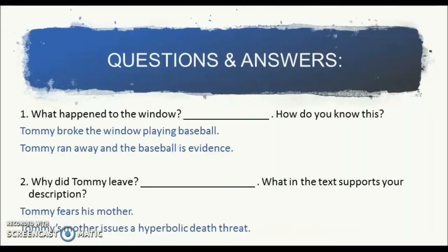Here are the questions and answers. What has actually happened to the window? From the situation, you can infer that Tommy broke the window by playing baseball. How do you know this? Tommy ran away and the baseball is evidence. Question number two: Why did Tommy leave? You can infer that Tommy is actually afraid of his mother. What in the text supports your description? Tommy's mother issues a hyperbolic death threat.